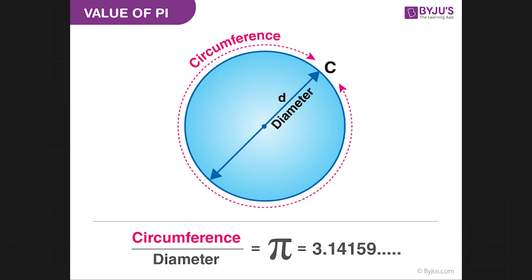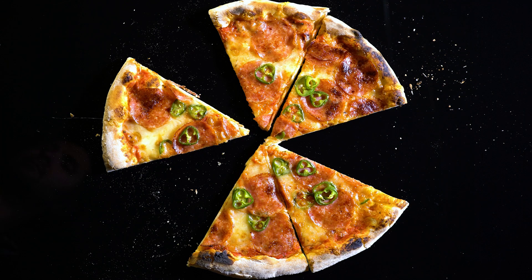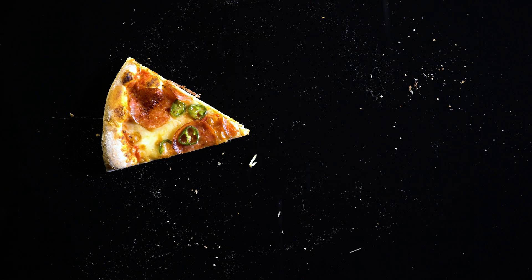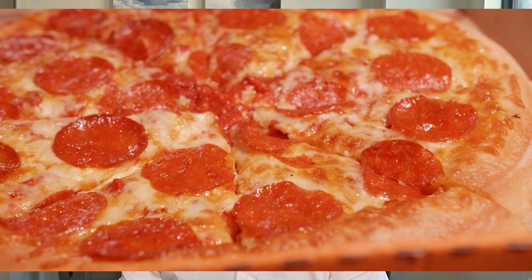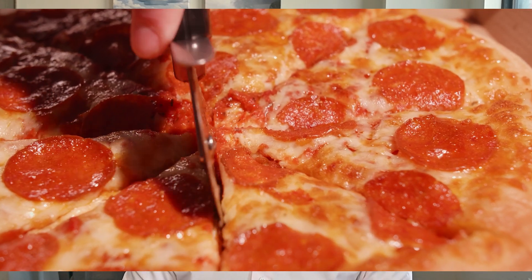Simply stated, Pi is a ratio between a circle's diameter and its circumference — in other words, how many times a circle's cross-section can be wrapped around its edge. It turns out that number is a little over three times. You can think about it with a pizza: if you order a large pizza that's 16 inches across, how much crust will wrap around it? It would be 16 Pi, or roughly 50.3 inches.